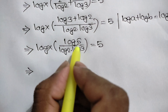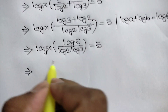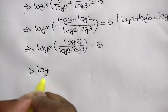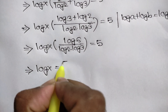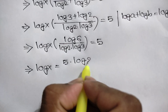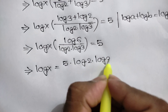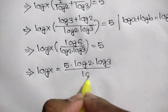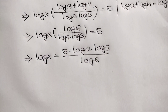Taking log of 6 over log of 2 times log of 3 to the right side, we get log of x is equal to 5 times log of 2 times log of 3 over log of 6.